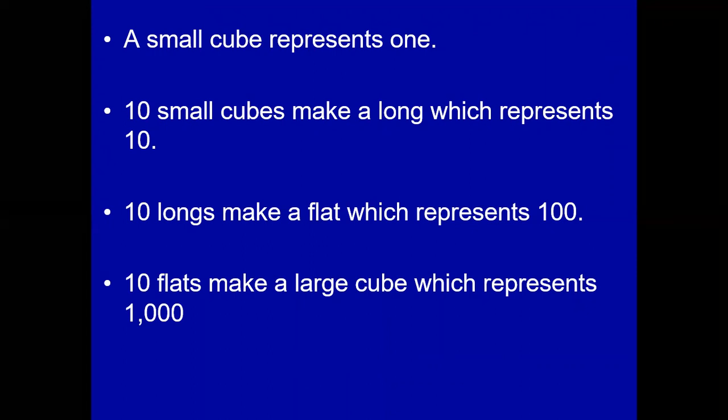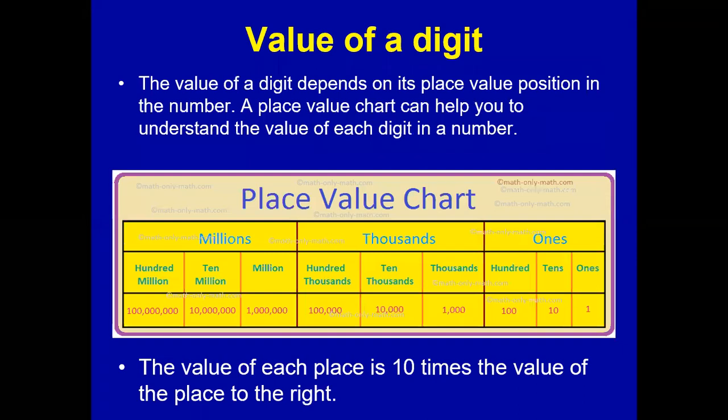Now let us learn about place value — the value of a digit in a number. The value of a digit depends upon its position in the number. A place value chart can help you understand the value of each digit. The chart is made up of periods; the first is the ones period on the right side, which is made up of ones, tens, and hundreds.